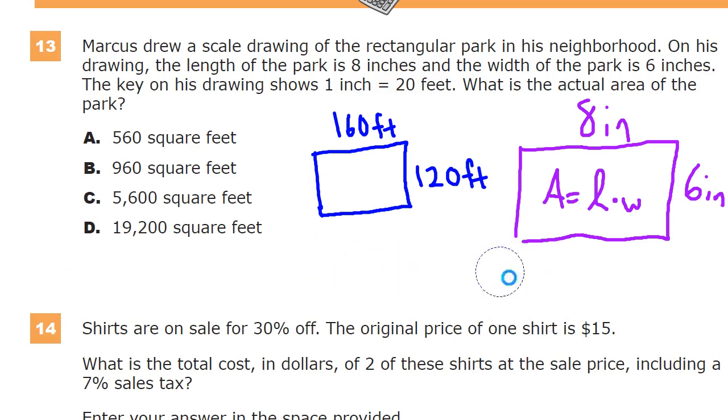Now, this is where we start to move into the realm of ridiculous. So, this is a calculator-allowed section. This might be a pretty reasonable time to assume that you could use the calculator here. The length is 160 times the width of 120. Because it's feet times feet, that's feet squared. That's a unit. It's a two-dimensional unit for area. If we're doing volume, it would be three-dimensional.